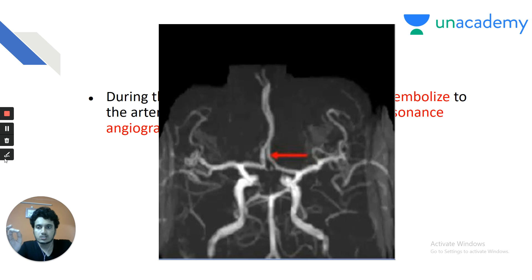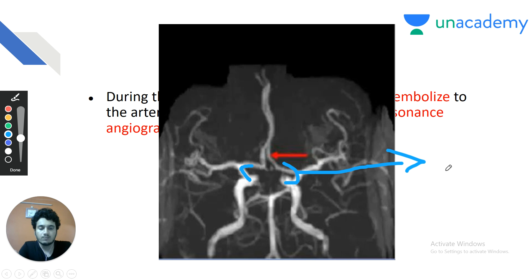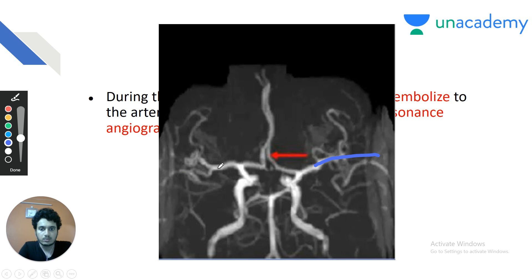You must be aware of the Circle of Willis — a must question for any entrance examination. The most important artery contributing to the Circle of Willis is the internal carotid artery. It gives off the anterior cerebral artery (ACA) as its first branch on both sides. The two anterior cerebral arteries are interconnected by the anterior communicating artery. One more branch of the internal carotid artery is the middle cerebral artery — the terminal and largest branch. But the middle cerebral artery does not contribute to the formation of the Circle of Willis.